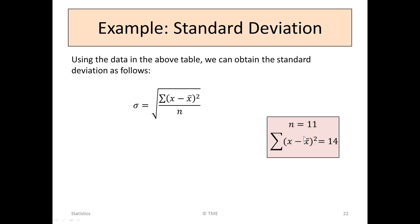So using this information to get the standard deviation, the formula said that sigma is equal to the square root of x minus x bar squared over n. But this term here is exactly what we've calculated here.